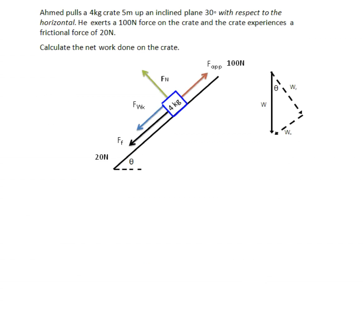We will now look at the same problem using a different method to calculate net work. Again: Ahmad pulls a 4 kilogram crate 5 meters up an inclined plane 30 degrees with respect to the horizontal. He exerts a 100 newton force on the crate and the crate experiences a frictional force of 20 newtons. The applied force is 100 newtons and the frictional force is 20 newtons down the slope.